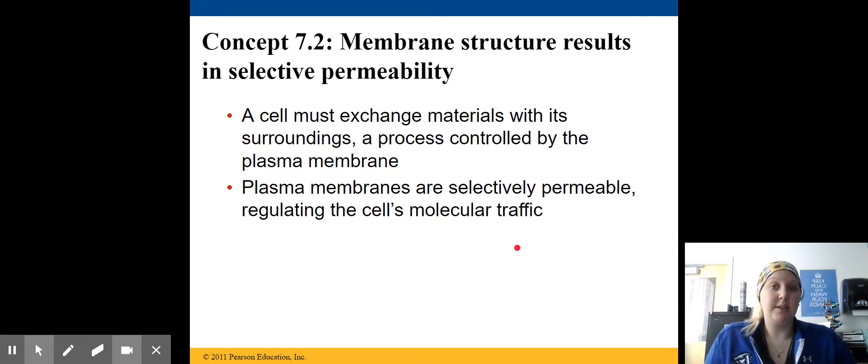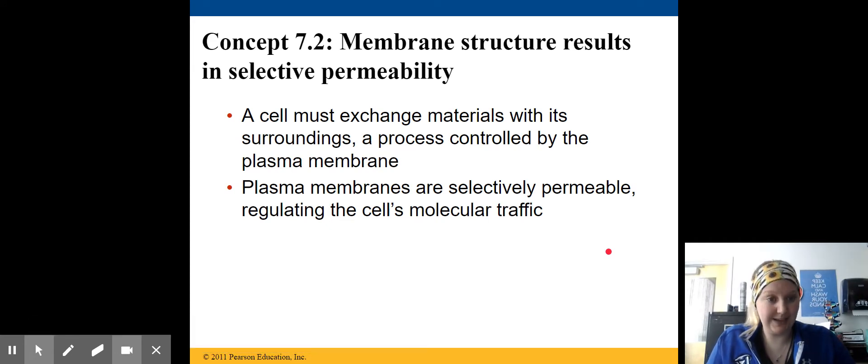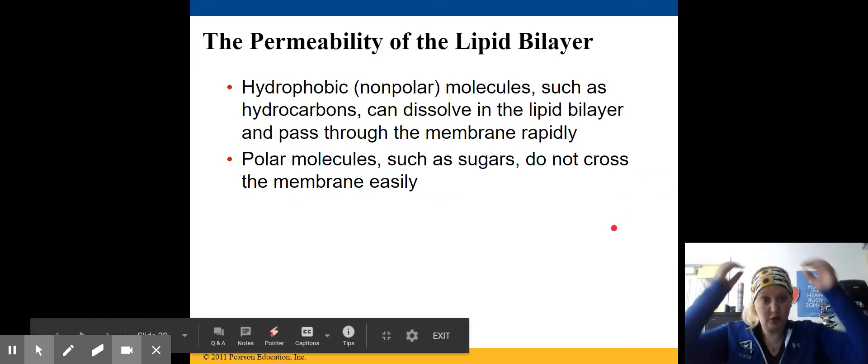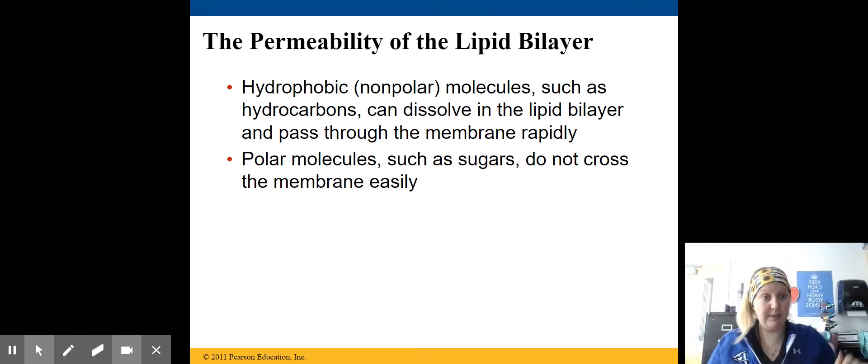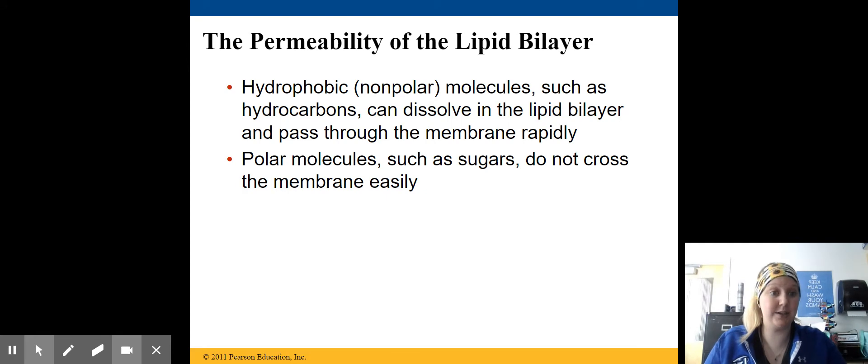Plasma membranes are selectively permeable. A cell must exchange its materials with its surroundings in a process that is highly controlled by the plasma membrane. The plasma membrane is selectively permeable, which allows some things to pass through while regulating other things that cannot pass through. Typically, hydrophobic or non-polar molecules have the ability to pass through the membrane relatively easily. They can dissolve through and into the lipid bilayer and then pass through the other side, where polar molecules and large molecules like sugars cannot cross easily and need assistance to cross the membrane.